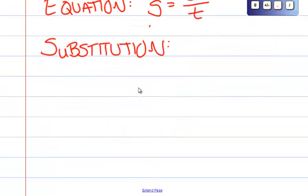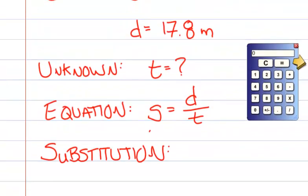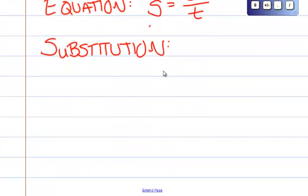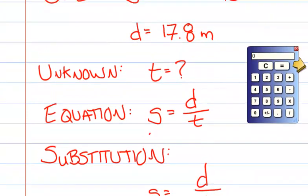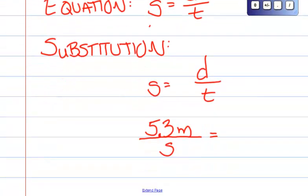So we know that the speed is 5.3 meters per second. So I'm going to rewrite the equation because it helps me to keep on track. We know it's 5.3 meters and that per means seconds goes on the bottom. The distance we know to be 17.8 meters.